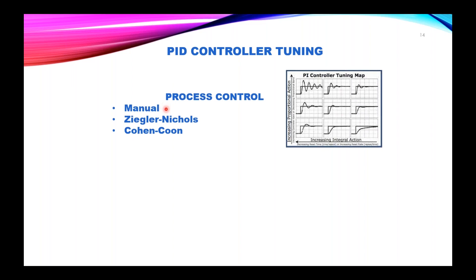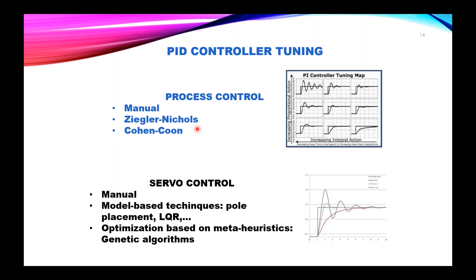For PID controller tuning in process control, we may use manual tuning, which depends on the knowledge of the operator, or the well-known Ziegler-Nichols and Cohen-Coon tuning rules. In the case of servo control, we also use manual tuning, but because servos have very simple linear models, we can use model-based techniques like pole placement or the linear quadratic regulator. In recent years, optimization based on meta-heuristics such as genetic algorithms and particle swarm optimization are also methods used to tune PID controller gains.